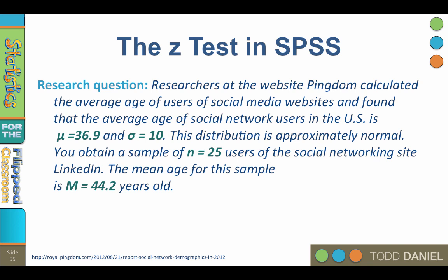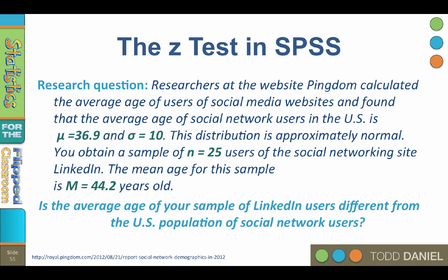Let's review the setup for this analysis. Researchers at Pingdom calculated the average age of users of social media websites and found that the average age of all social network users in the United States is a mean of 36.9, with a standard deviation of 10, and the distribution is approximately normal. You obtain a sample of 25 users of LinkedIn, with a mean age of 44.2 years old. Is the average age of your LinkedIn sample different from the U.S. population of social network users? We're going to answer that research question by running a z-test in SPSS using syntax.